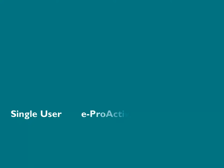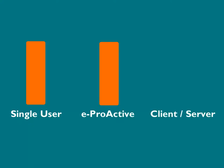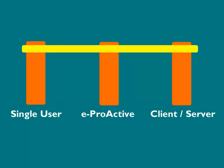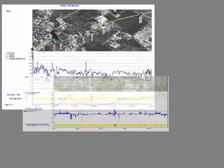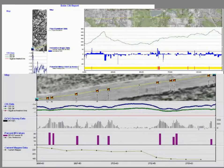Regardless of the nature of your ProActive database and its location, each version of ProActive provides the same high level of functionality, providing easy-to-use importation, editing, and reporting capabilities for convenient corrosion control data management. Graphical reporting of multiple data sets has never been easier or more impressive, and ProActive even interfaces with web services, allowing integration with imagery data.